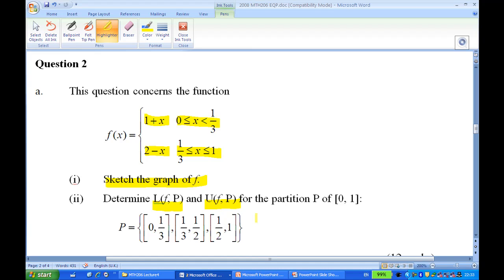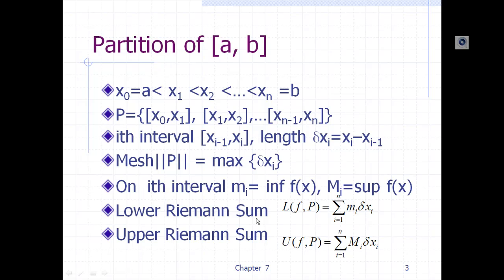Let's look at a PowerPoint slide. In general, a partition of [a, b] is x₀ to x₁, x₁ to x₂, and so on, where x₀ = a and xₙ = b. The length of each interval is Δxᵢ = xᵢ − xᵢ₋₁. On each interval you can find the infimum m and supremum M of f(x). The lower Riemann sum is the sum of infimum times Δxᵢ over all intervals, and the upper Riemann sum is the sum of supremum times the length of the interval.